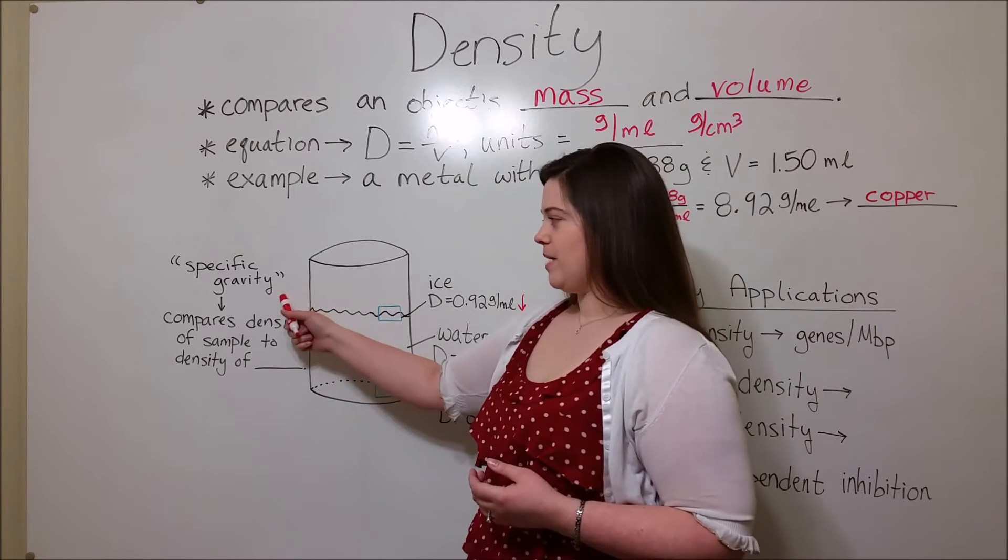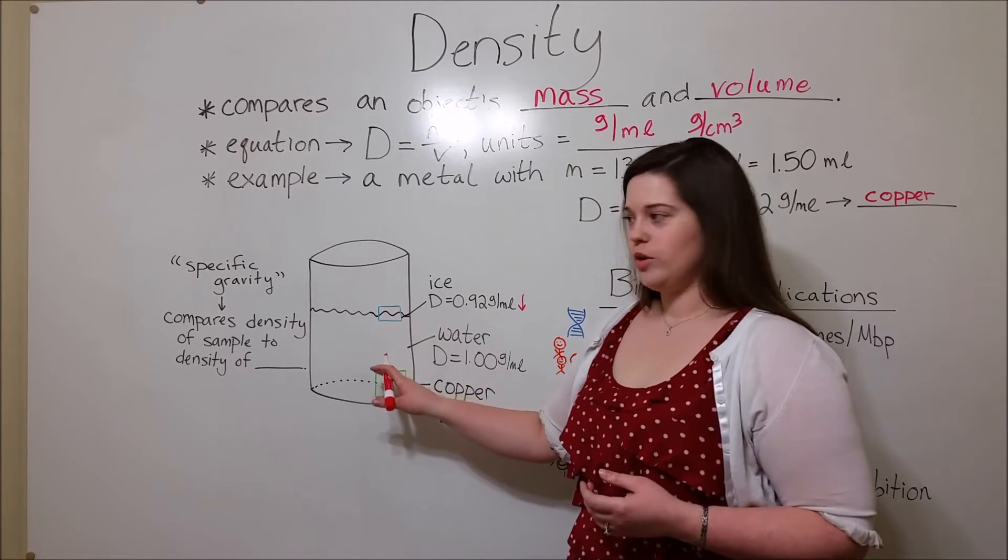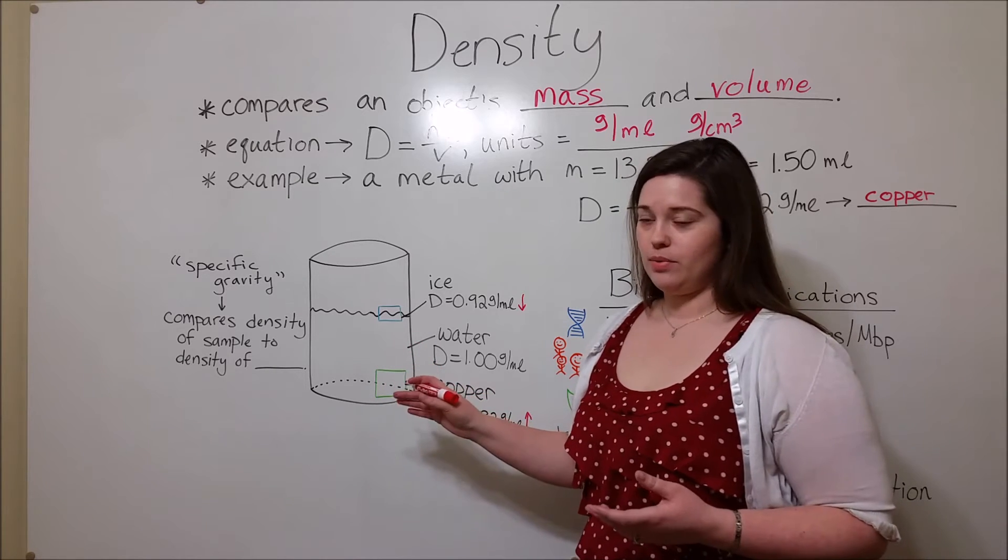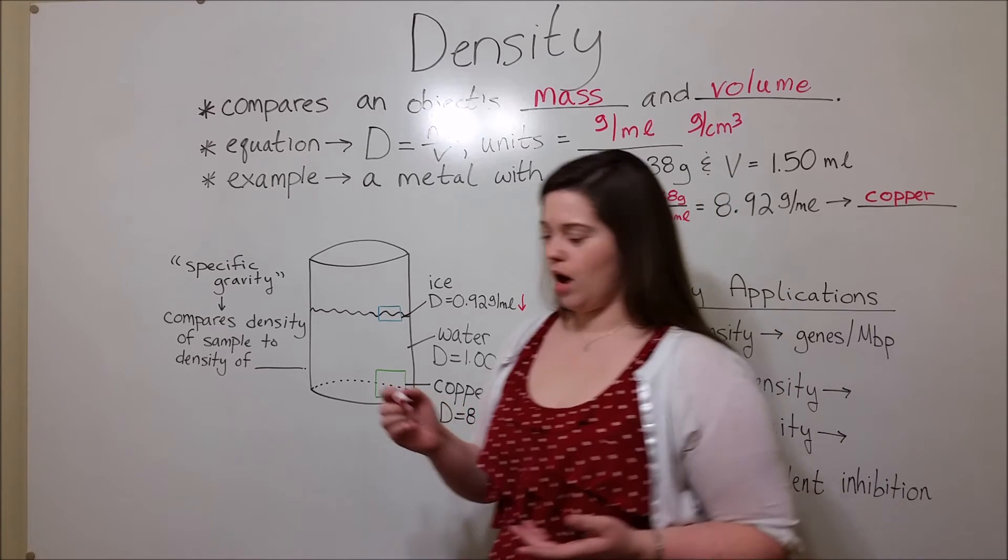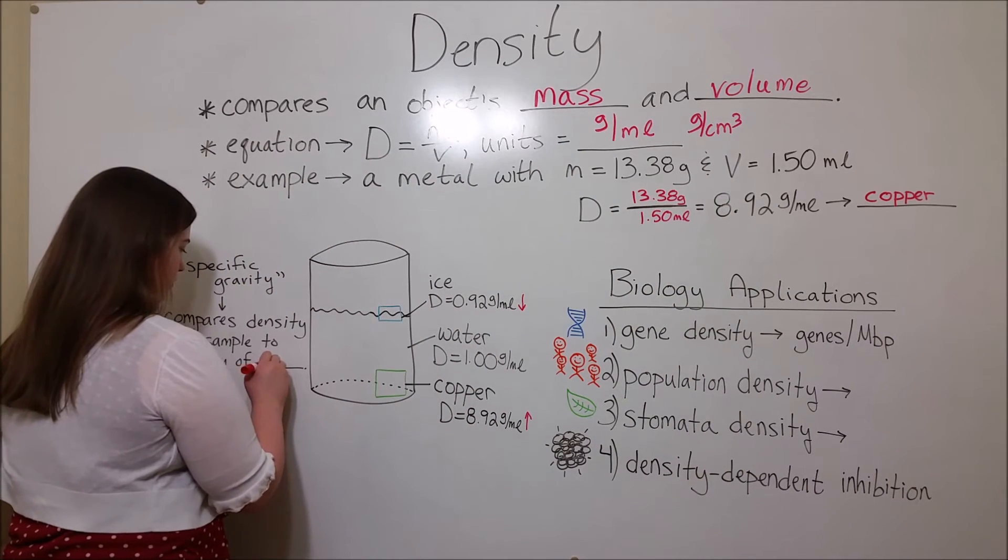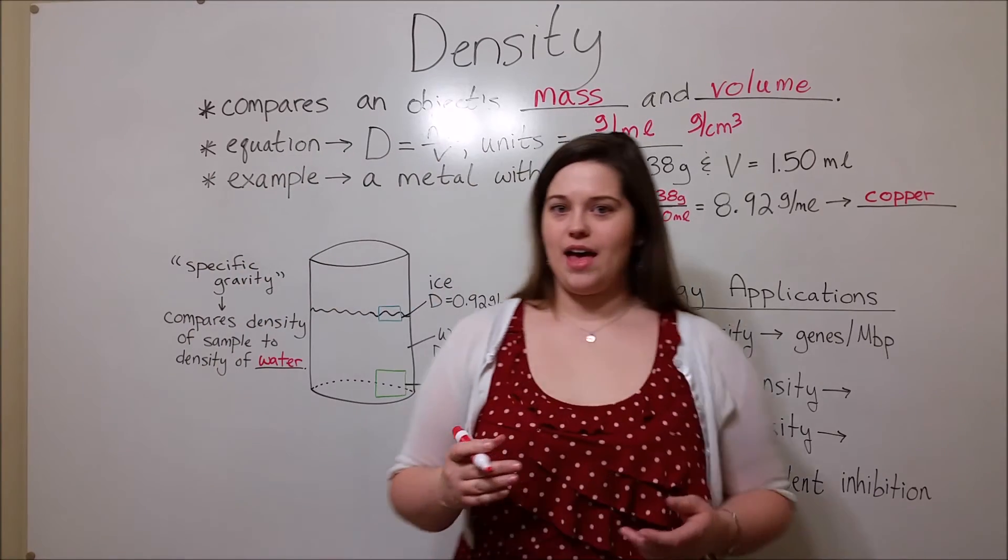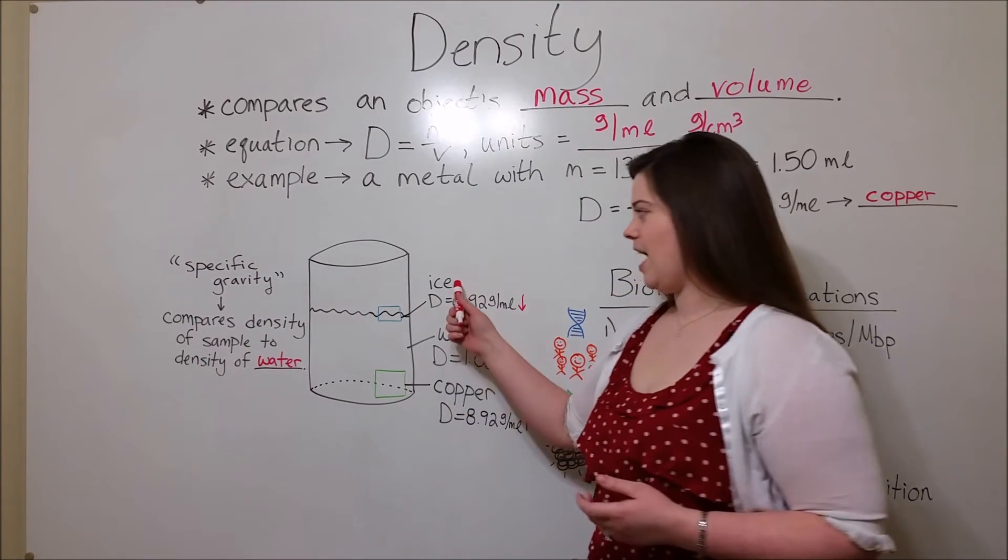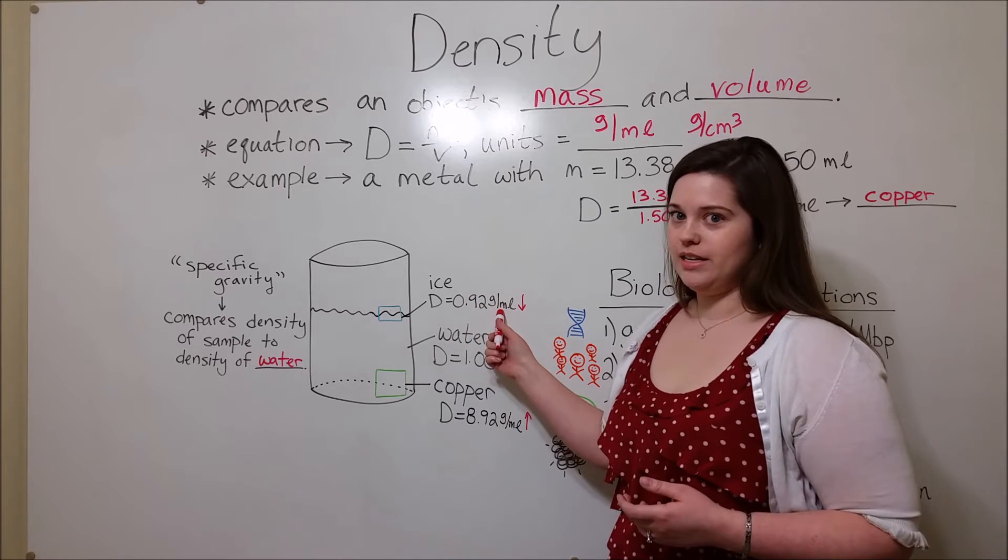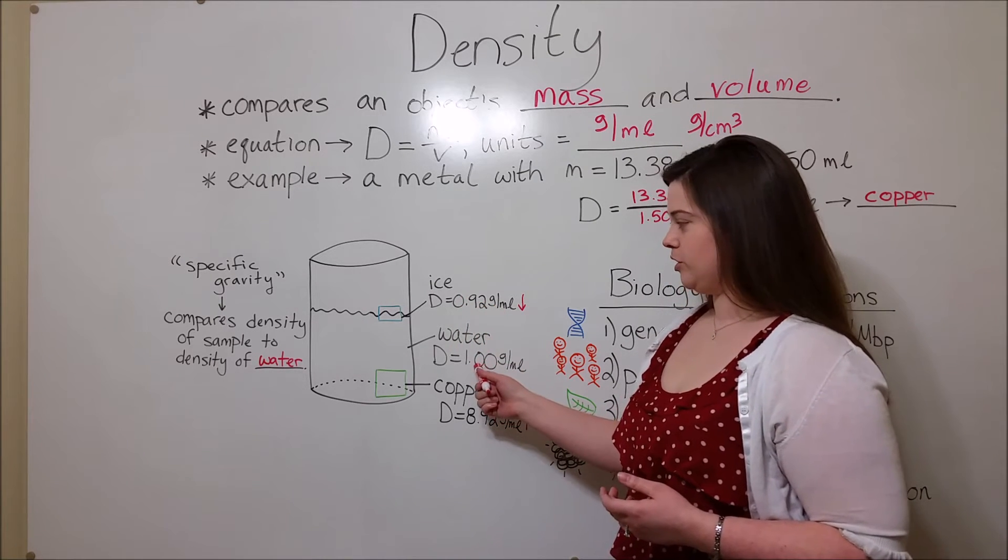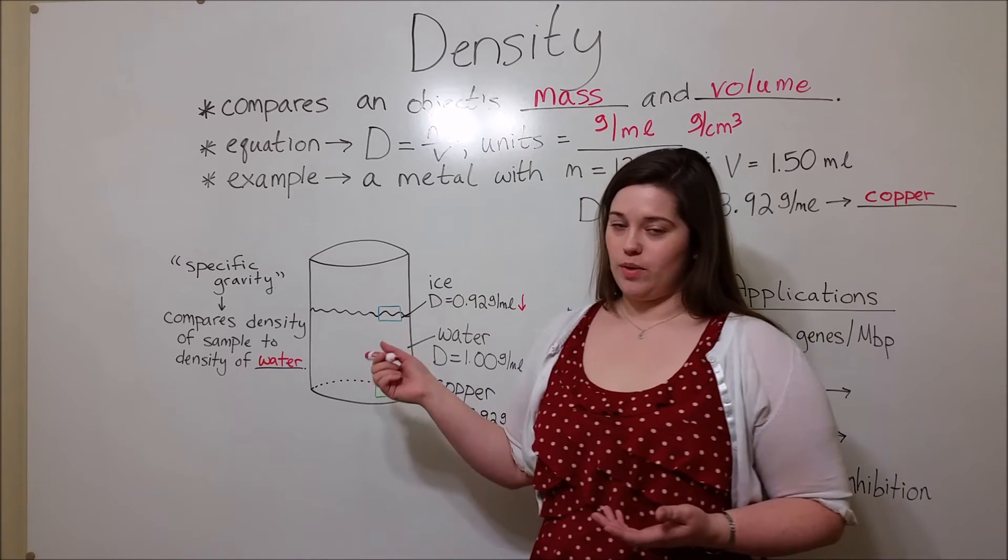Let's also take a moment to talk about specific gravity. Specific gravity is the term for when you compare the density of a sample, like that of ice or copper, to the density of water. We would say that the specific gravity of ice is 0.92 grams per milliliter divided by the density of water, which is 1. Thus, the specific gravity of ice is 0.92.